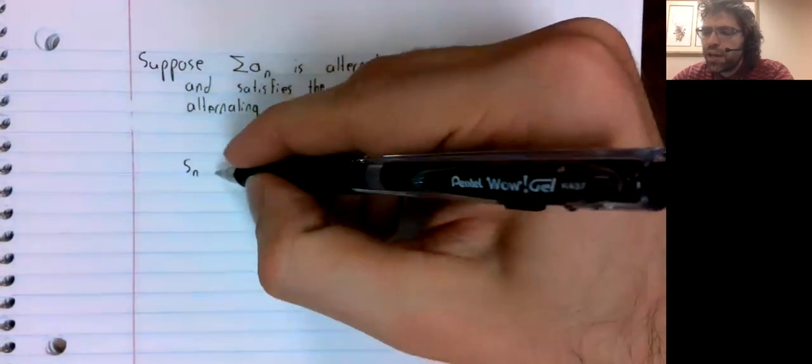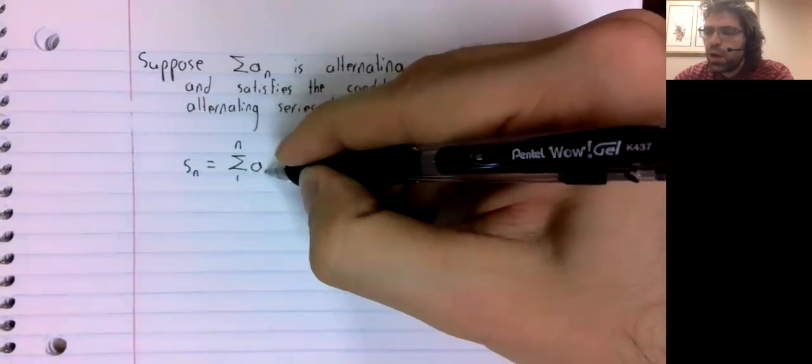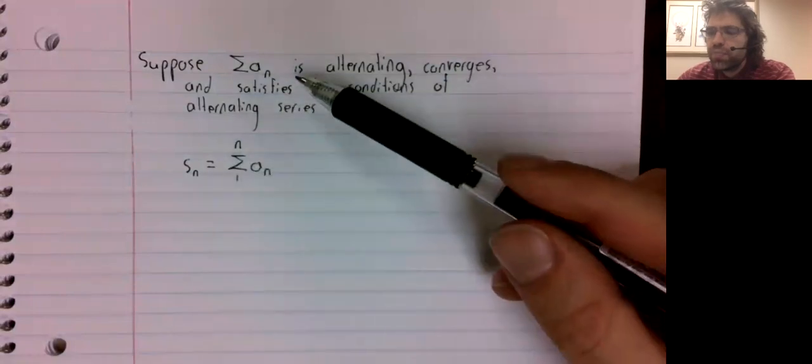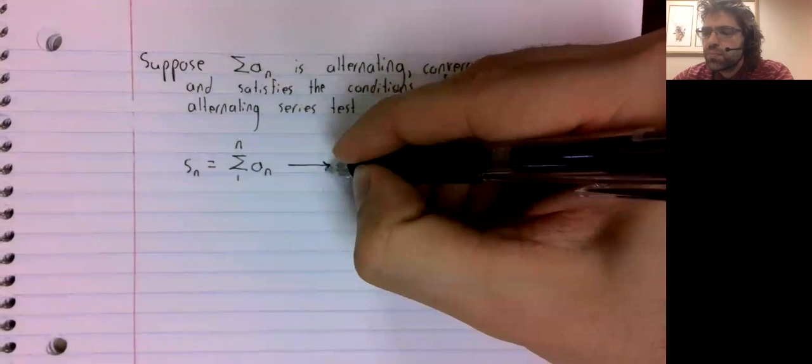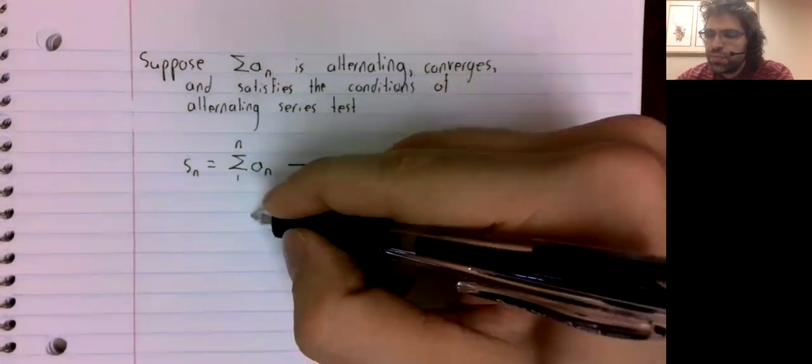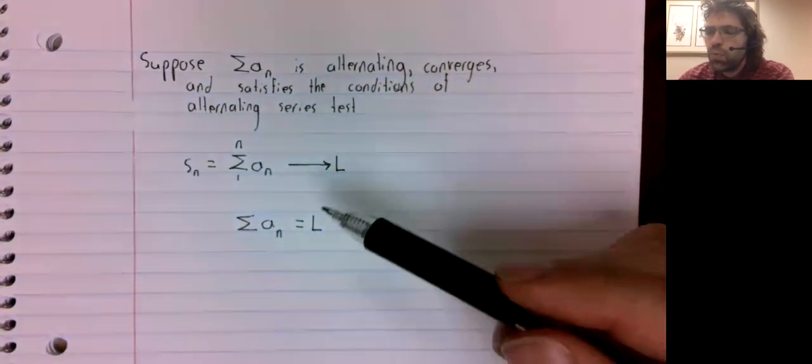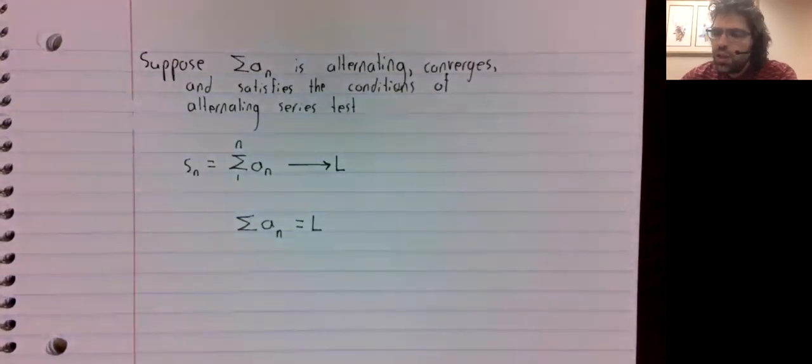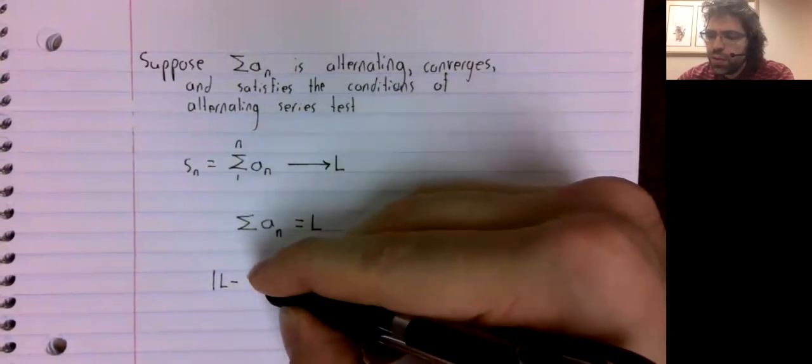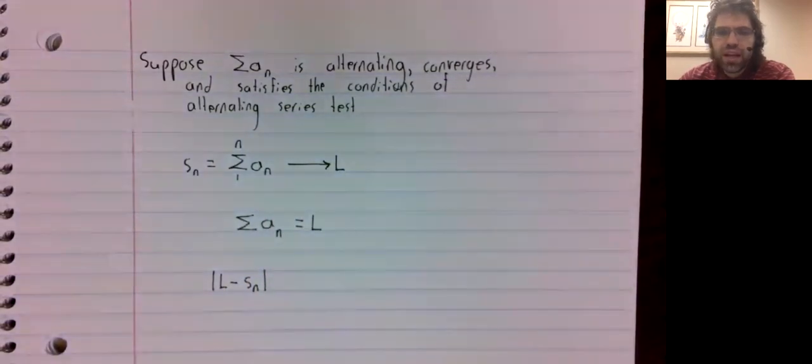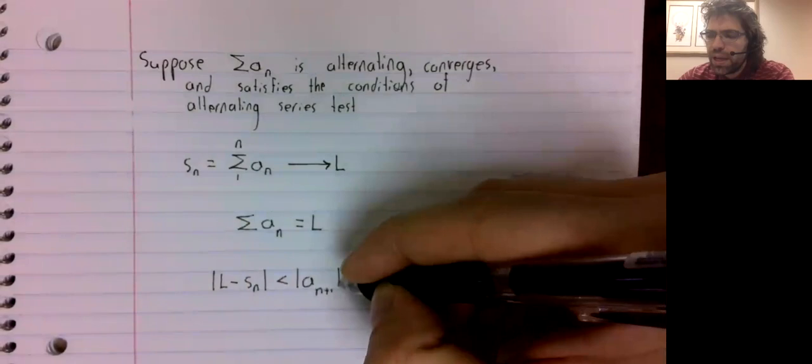Remember how we defined convergence? We defined convergence in terms of the partial sums. So if this series converges, these partial sums approach some limit. And this infinite sum equals this limit. We have a theorem in this case that the absolute value of the limit minus the nth partial sum is less than a sub n plus 1.